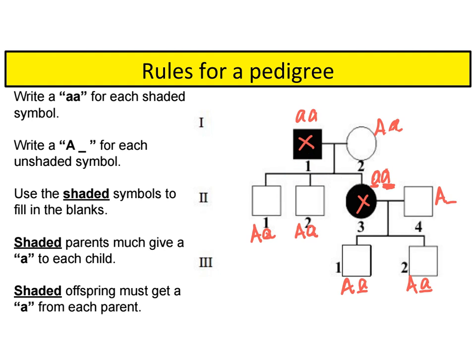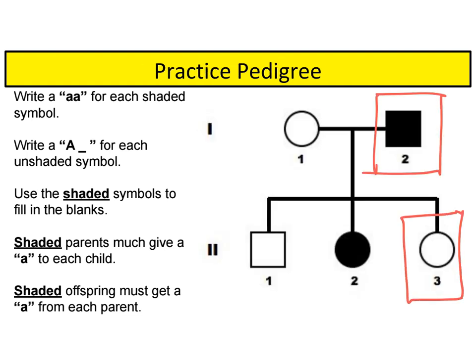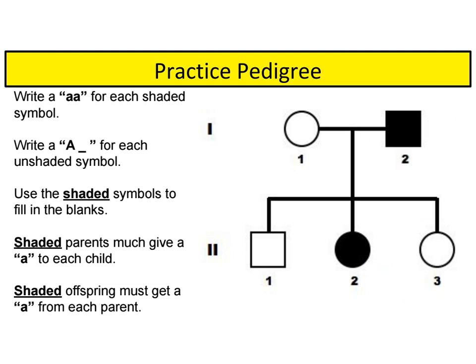Because we have no other information to draw from, we do not know if this individual right here is big A, big A or big A, little a. Because of that, we're going to need to write both. This person's complete genotype remains unknown, but the pedigree is complete for the information we have. What are the genders and symbols for these two individuals? This male is generation 1, person 2. And this female is generation 2, person 3. Now let's figure out their genotypes.